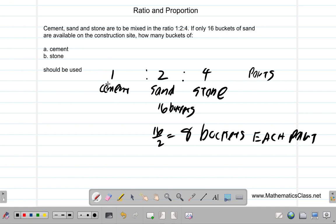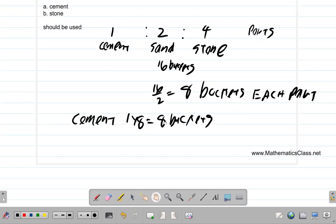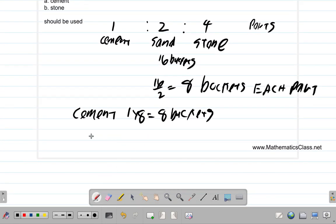Now, that's what I mean. If you see, cement is only 1 part. So it's 1 by 8. That's 8 buckets. So you have used 8 buckets of cement. When it comes to the stone, it's 4 parts. So it's 4 by 8. That would have been 32 buckets of stone.